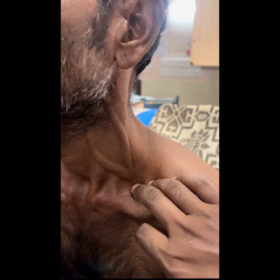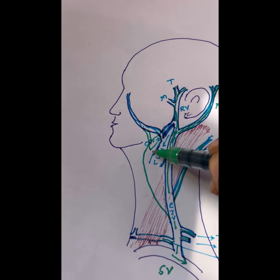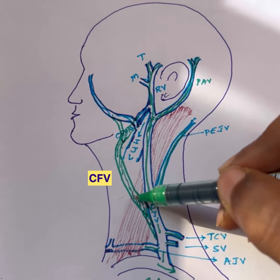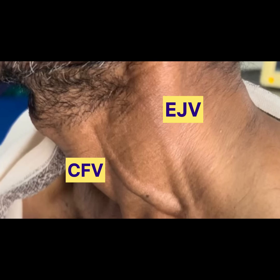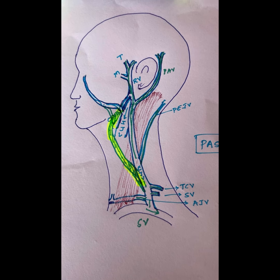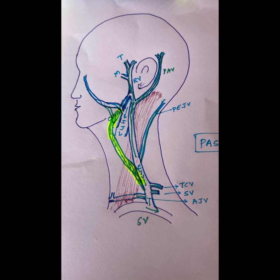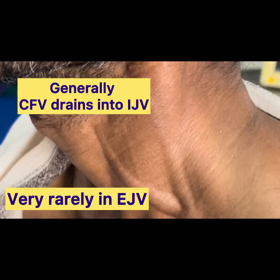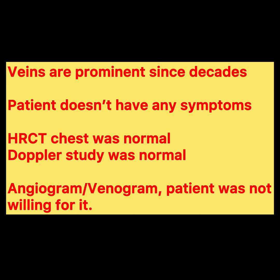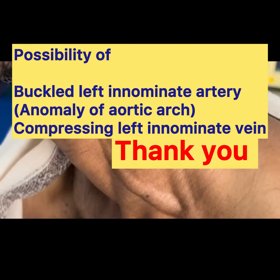Normally the common facial vein opens into the internal jugular vein. Rarely — in around 8% of individuals — the common facial vein can go superficial to the sternomastoid and open into the external jugular vein. So in this case, we are seeing an anatomical variation where the common facial vein, instead of draining into the internal jugular vein, is going superficial to the sternomastoid and draining into the external jugular vein. This is a rare anatomical variation.